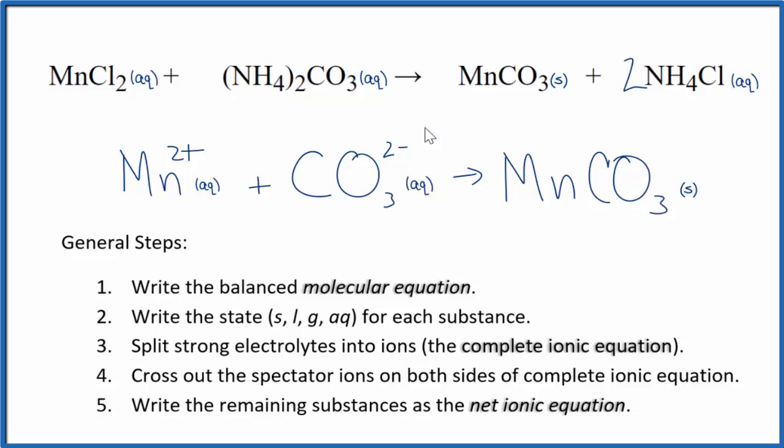So this is the balanced net ionic equation for manganese 2 chloride plus ammonium carbonate. You'll note charge is balanced. We have a 2 plus and 2 minus. Net charge of 0 over here in neutral net charge of 0. If you count the atoms up, they're balanced as well.